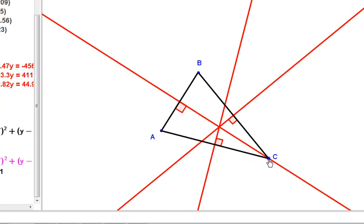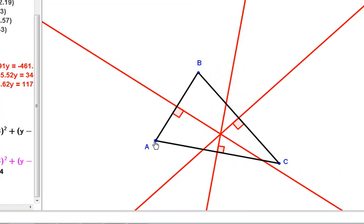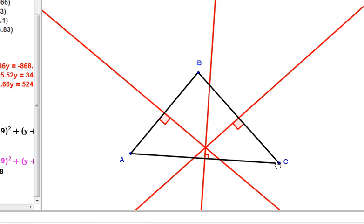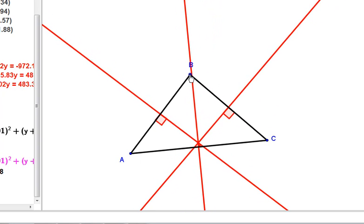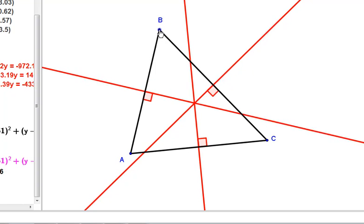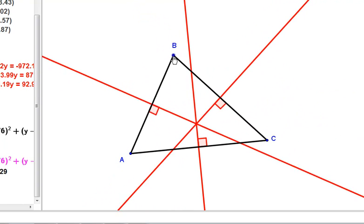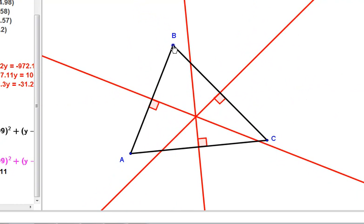No matter what shape our triangle takes, these perpendicular bisectors all meet at the same place. So I can put a point at that point of intersection.